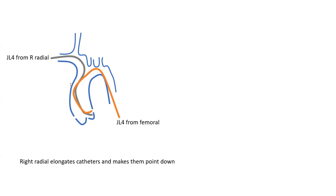As we go through, understand that fluoro is a 2D abstract thinking — you have to imagine how the catheters are going and try to understand the anatomy. This is a Jutkins left four coming from radial, and the first difference you notice is that the radial axis will elongate the catheters and make them point down. The same arm length looks elongated and pointing down. Therefore, in the same patient, if JL4 is good from femoral, it's not good from right radial.